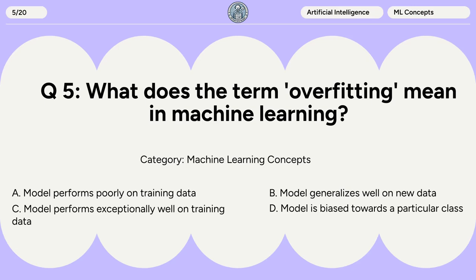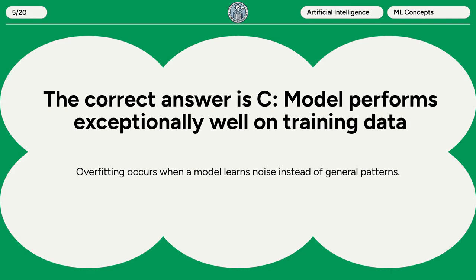Question 5. What does the term overfitting mean in machine learning? A. Model performs poorly on training data. B. Model generalizes well on new data. C. Model performs exceptionally well on training data. D. Model is biased towards a particular class. The correct answer is C: model performs exceptionally well on training data. Overfitting occurs when a model learns noise instead of general patterns.